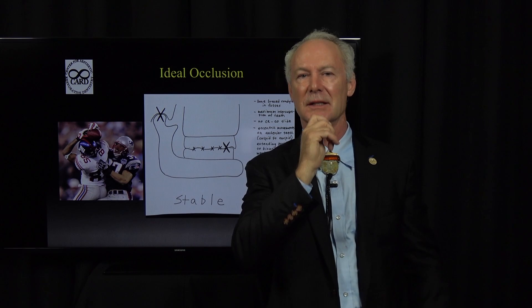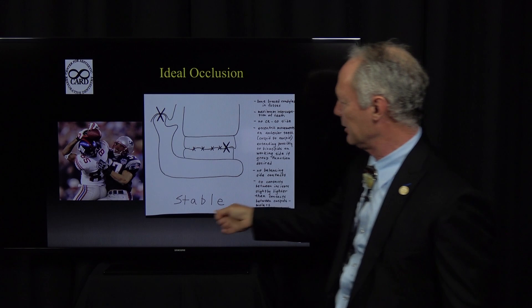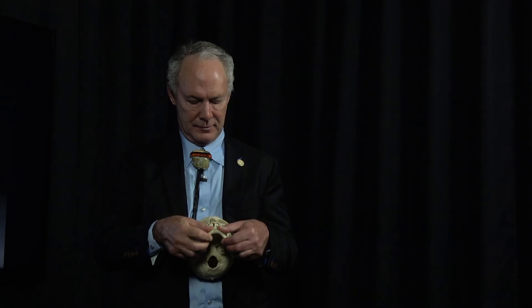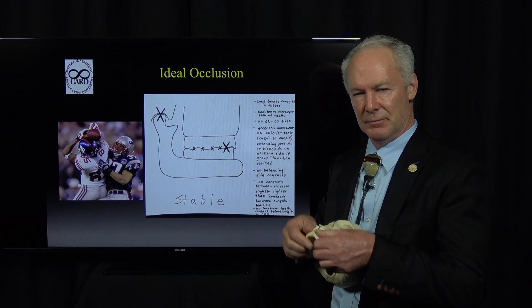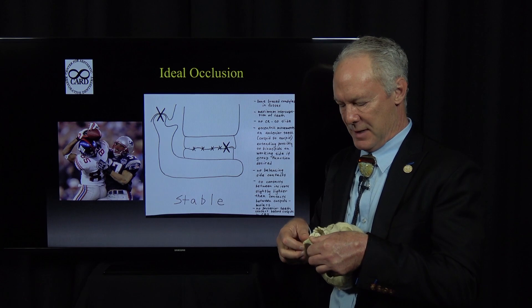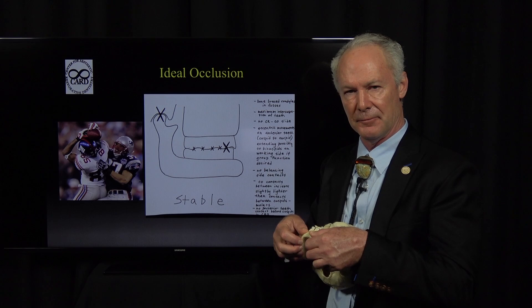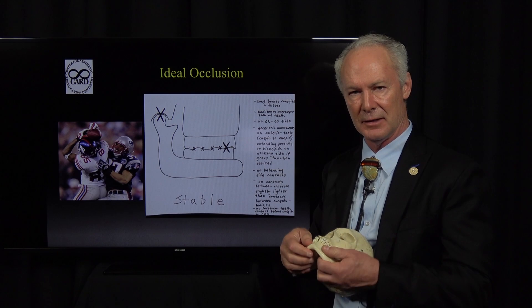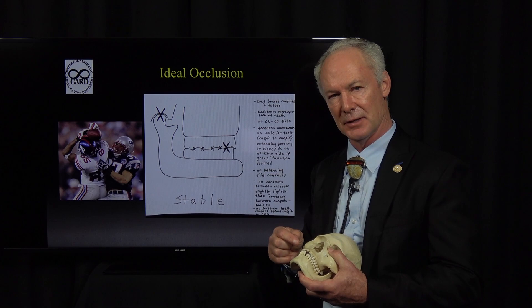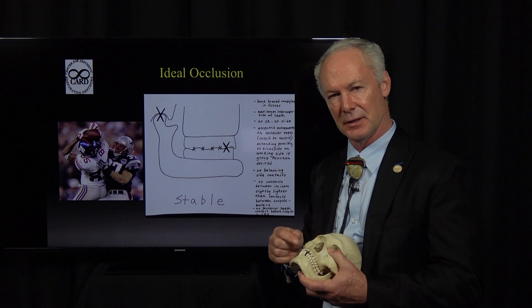No CRCO slide. With the condyle seated maximally in the fossa, when you touch the patient's teeth together and then have them squeeze, there should be no perceptible slide. When you touch the patient's teeth together with the condyle seated in centric relation, the patient should feel bilateral simultaneous contact. When they squeeze, there should be no perceptible slide from centric relation to centric occlusion — the teeth should be stable, with no change from when contacting in centric relation to centric occlusion.